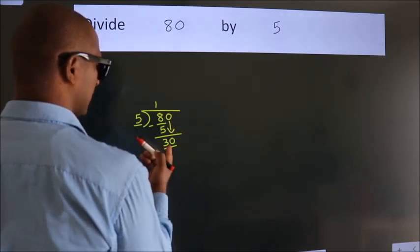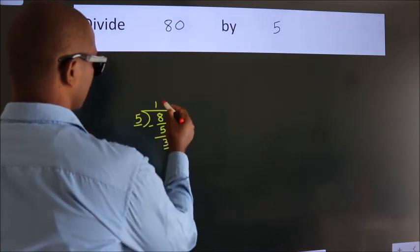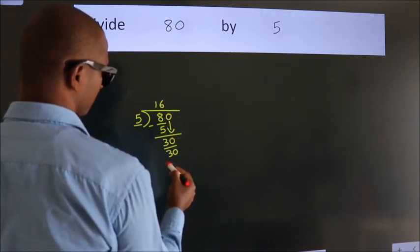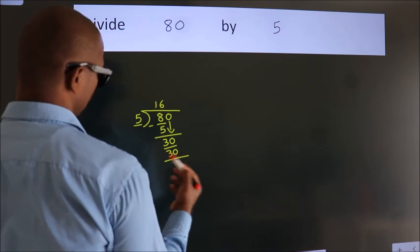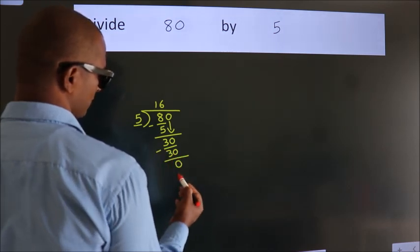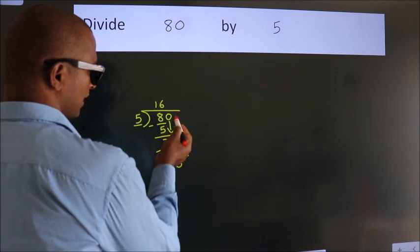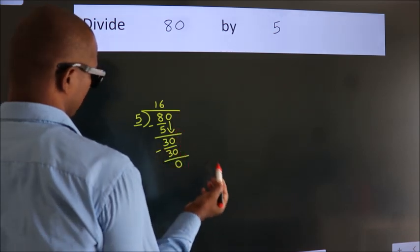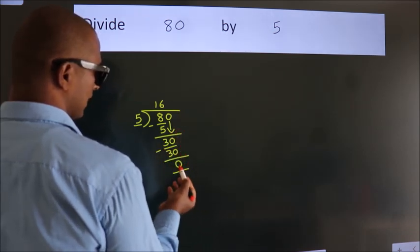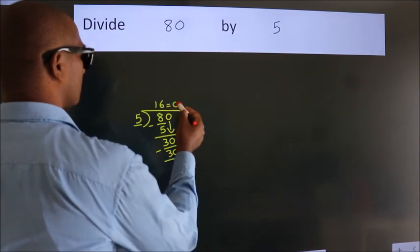When do we get 30 in the 5 times table? 5 times 6 is 30. Now we subtract. We get 0. After this, no more numbers to bring down, and we got remainder 0. So this is our quotient.